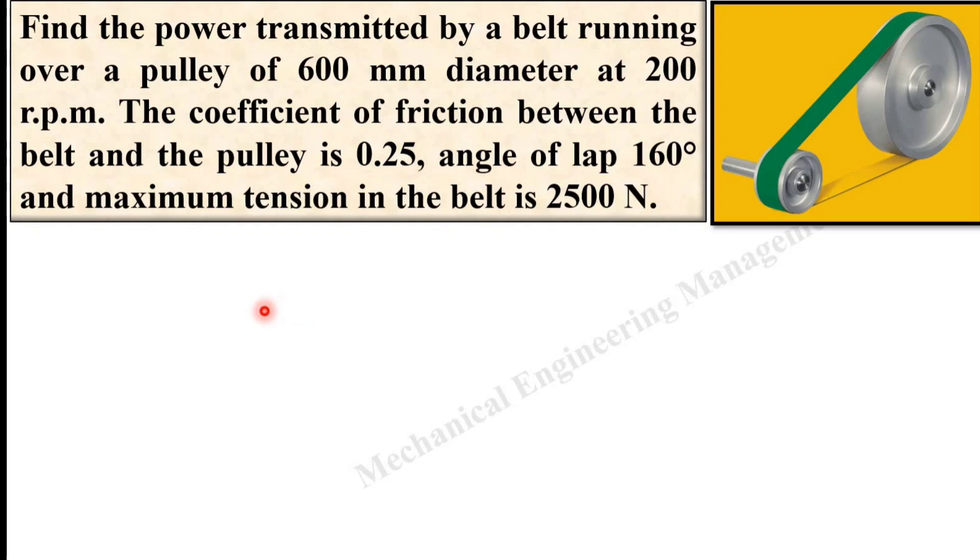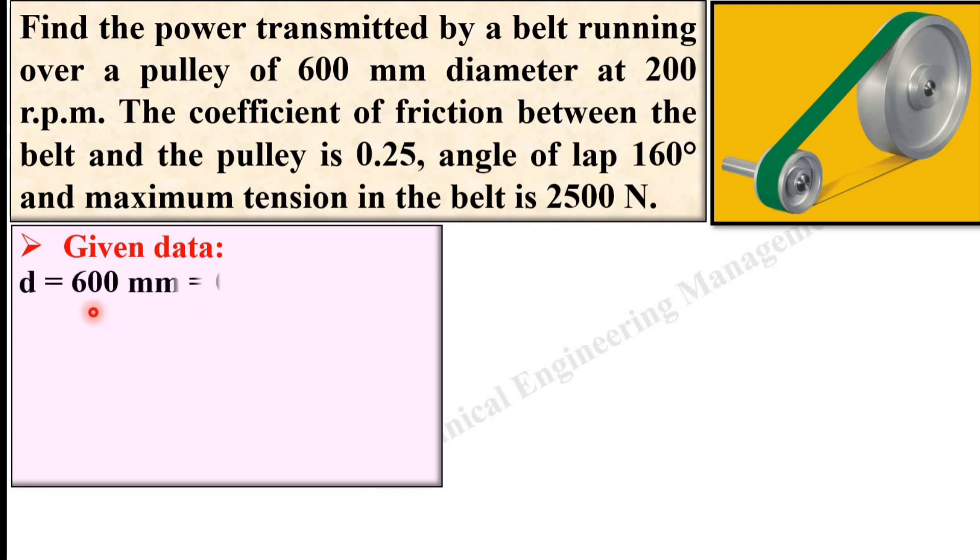First of all write down the given data with the symbolic notation. Here it is given to you belt running over a pulley of 600 mm diameter, so it will be d is equal to 600 mm equals 0.6 m, then having rpm 200, so it will be n is equal to 200 rpm.